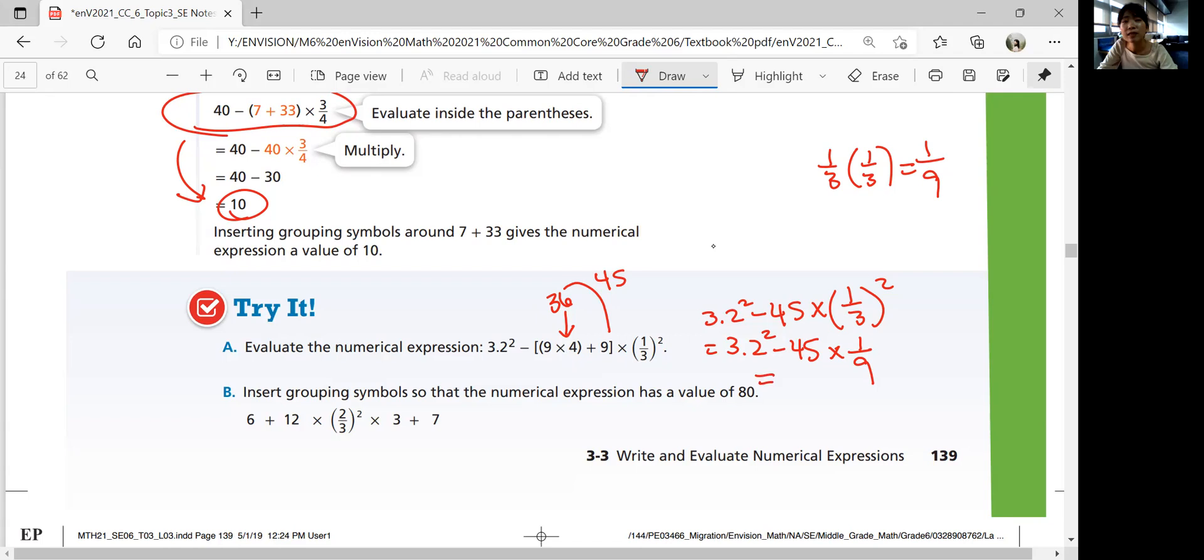So then you have 3.2 squared minus 45 times 1 over 9. You do multiplication or subtracting first. Multiplication first. 45 divided by 9. Wait, we need to solve this power of 2. 3.2 times 3.2 is 3.2 squared.